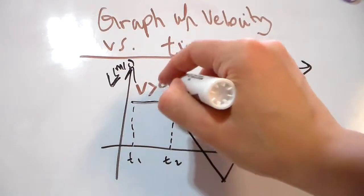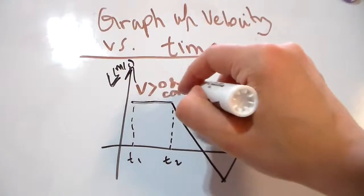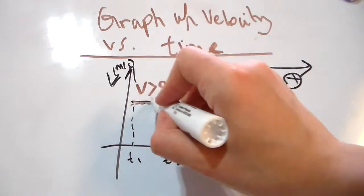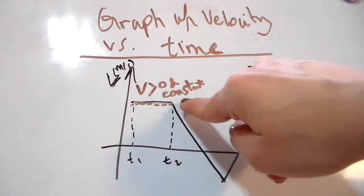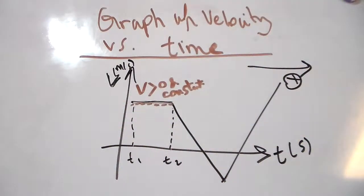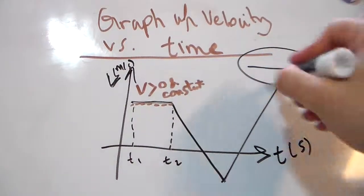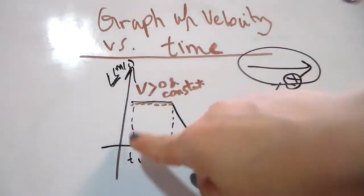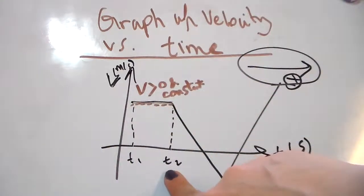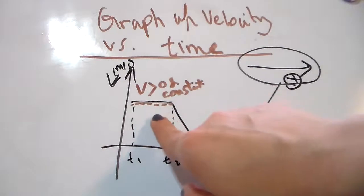Positive and constant - the same number till we get to t2. It was moving towards the right. So let's suppose the object was going in a straight line, and the positive direction is to the right. During t1 and t2, the object was moving to the right.